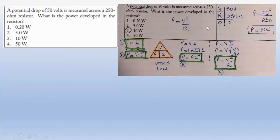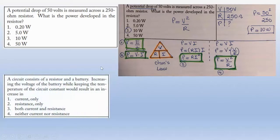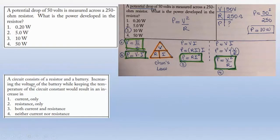Next problem: A circuit consists of a resistor and a battery. Increasing the voltage of the battery while keeping the temperature constant results in an increase of what? Since voltage is the energy that pushes the current, a higher voltage means more energy to push, so the current will increase.